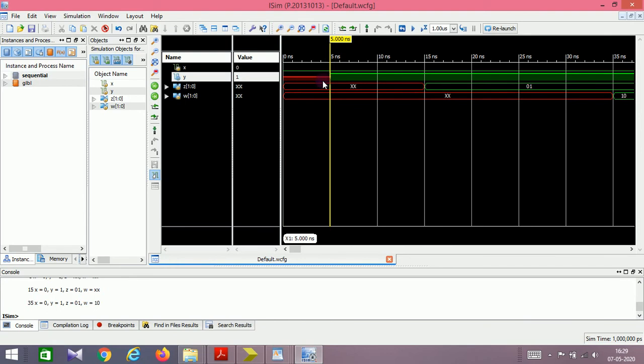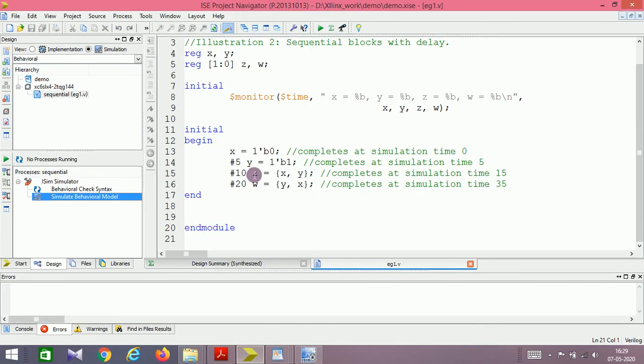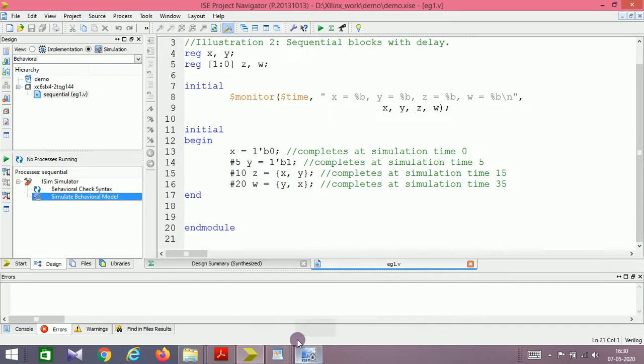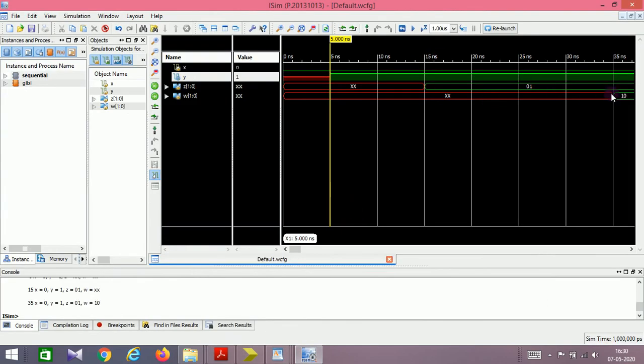Zoom to fit. At five nanoseconds, Y has been assigned with one. At five plus 10, 15 time units, Z will be assigned with X equals zero, Y equals one, zero one. At 15 time units, Z has been assigned with zero one. And after that, 15 plus 20, 35 time units, W will be assigned with Y equals one, X equals zero, one zero. So this proves that the statements inside begin and end are executing sequentially.